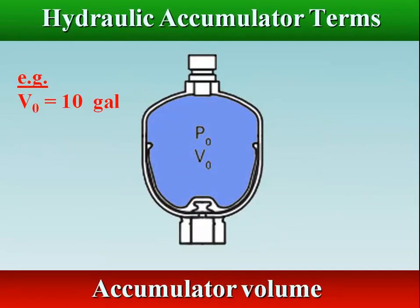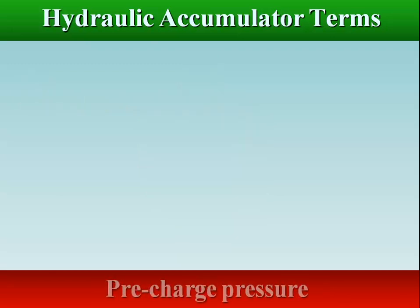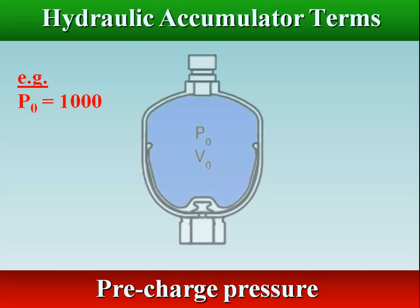Accumulator volume is the total volume of the accumulator, which includes both gas and fluid volume. Precharge pressure is basically the pressure of the nitrogen in an accumulator without any hydraulic fluid in the accumulator.